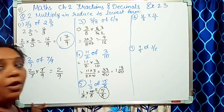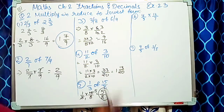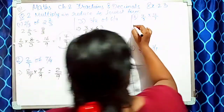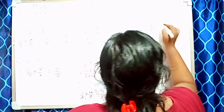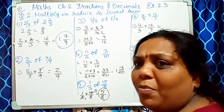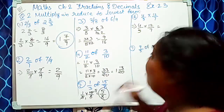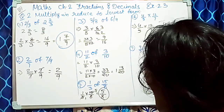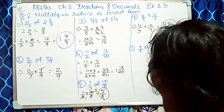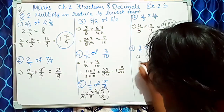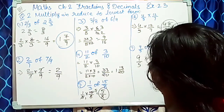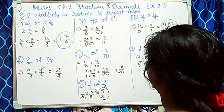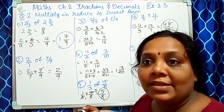Ab is sum mein: 4/5 into 12/7 — 4×12=48, 5×7=35 — toh answer hai 48/35. Agle mein: 9/5 of 3/5, that is 9×3=27, 5×5=25 — answer hai 27/25.